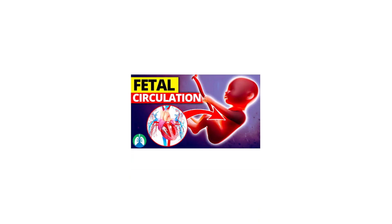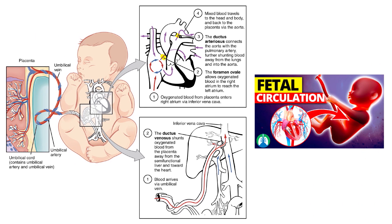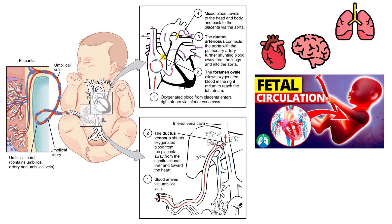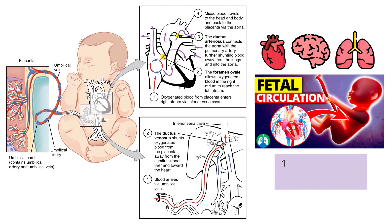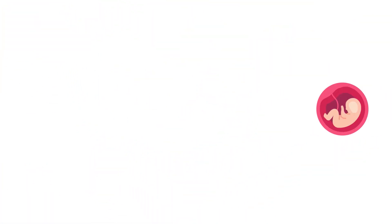Fetal circulation is a remarkable process that ensures the proper growth and development of a fetus in the womb. By utilizing a series of shunts, blood flow is redirected and optimized to meet the demands of vital organs such as the heart, brain, and lungs. This includes the ductus venosus, ductus arteriosus, and foramen ovale, which is what we are going to discuss in this quick video.